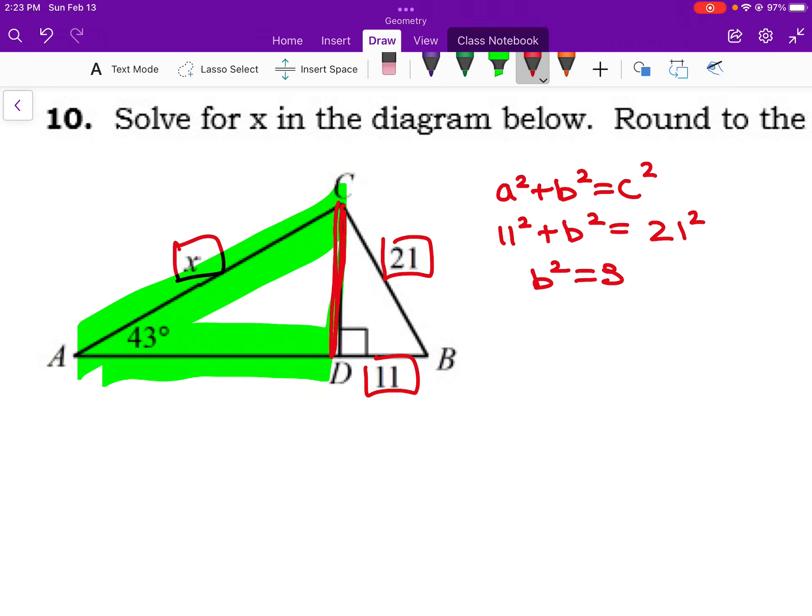So if I do 21 squared minus 11 squared, b squared is equal to 320, which is not a perfect square. So we're going to have to simplify that. So 320, if I do a factor tree, breaks into 2 and 160. 160 also is not a perfect square, but that would break into 10 and 16.